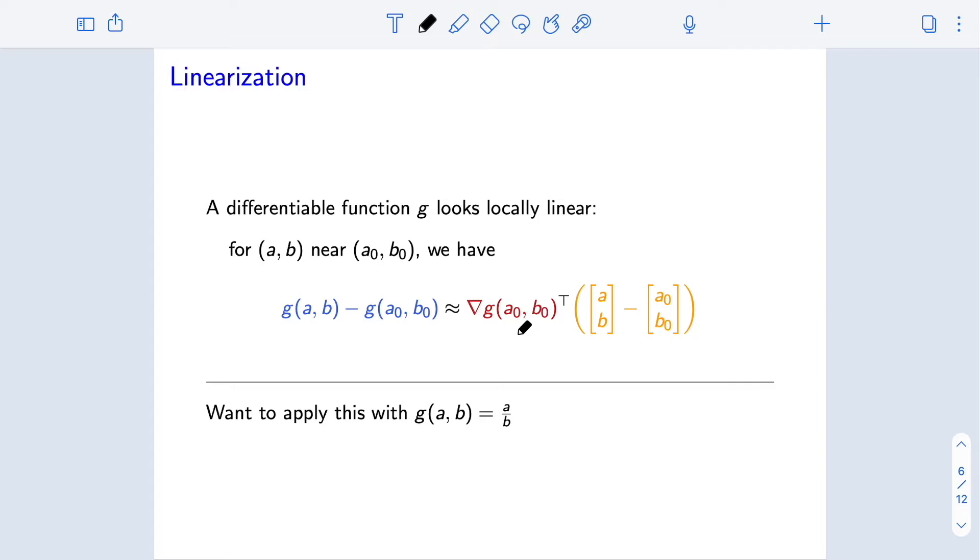I've written this as an approximate statement informally here. We could actually write this as an equality and add a term that is little o of the norm of ab minus a0 b0. And this is assuming that g is suitably differentiable. Our goal is to apply this with g of ab equals a over b, because our parameter psi was sigma divided by mu. So that's the differentiable function that we're going to care about here.